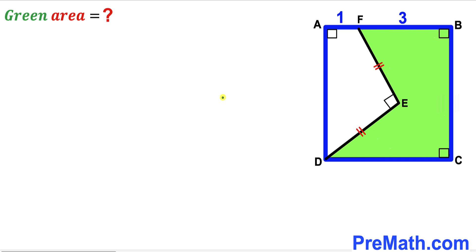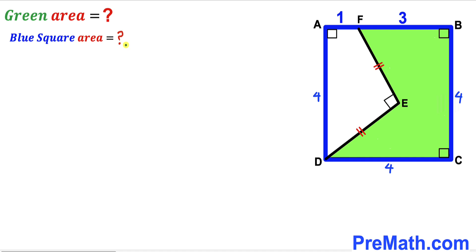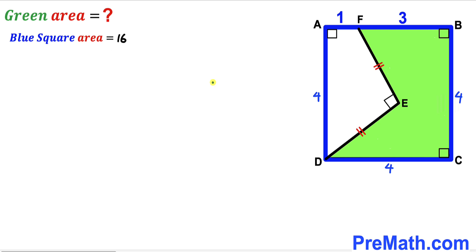Let's get started. Let's focus on the blue square ABCD. We know all side lengths are equal, and side AB is 1 plus 3, which equals 4 units. So all sides are 4. Now let's calculate the area of the blue square. The area formula is S squared, where S is the side length. In our case the side is 4, so the area is 4 squared, which equals 16 square units.